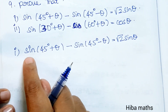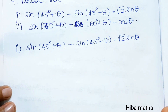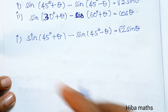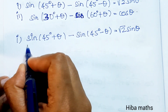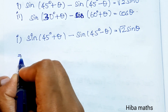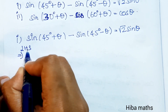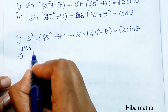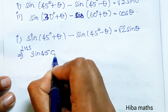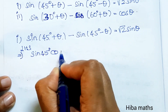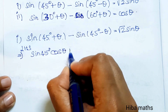We apply the formulas sin(A+B) and sin(A-B). The formula for sin(A+B) is sin A·cos B plus cos A·sin B, and we apply it directly to the LHS.